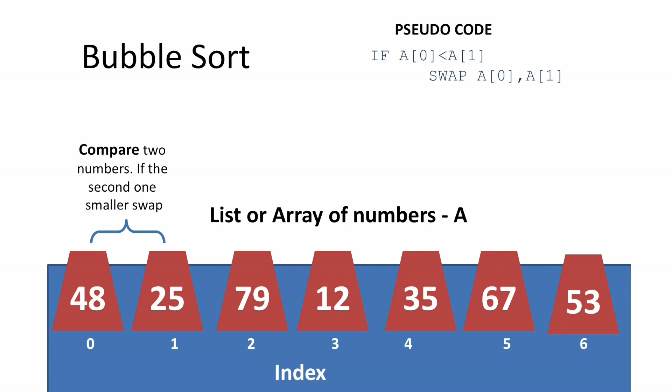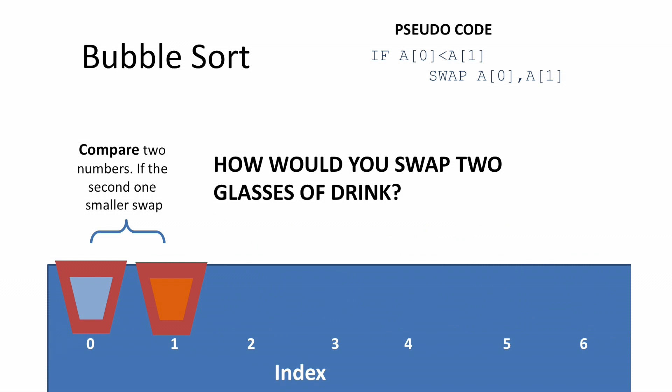In any sorting algorithm, you'll see that you have to swap things quite often. We're going to explain how swapping works. To understand how swapping works in the memory of a computer, compare this with two glasses of drink. How would you swap them? That's right, you need a third temporary glass.